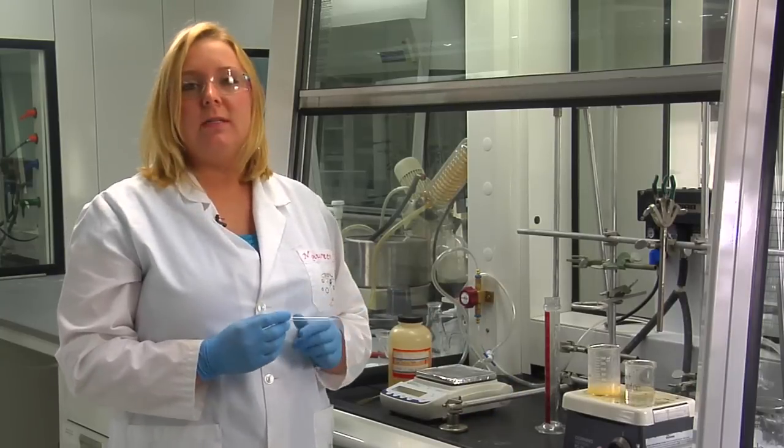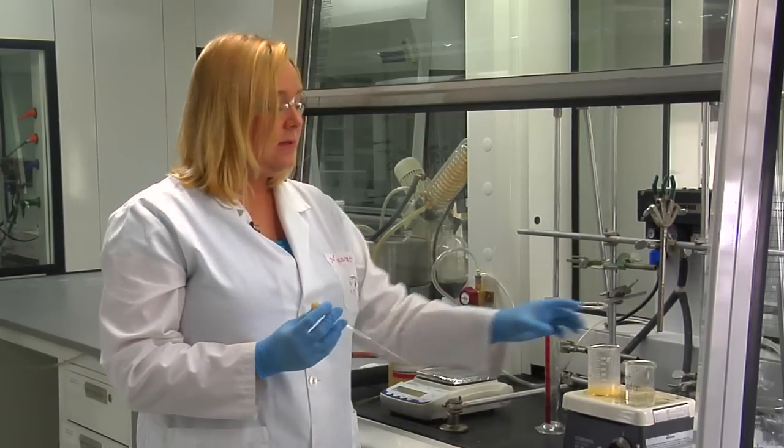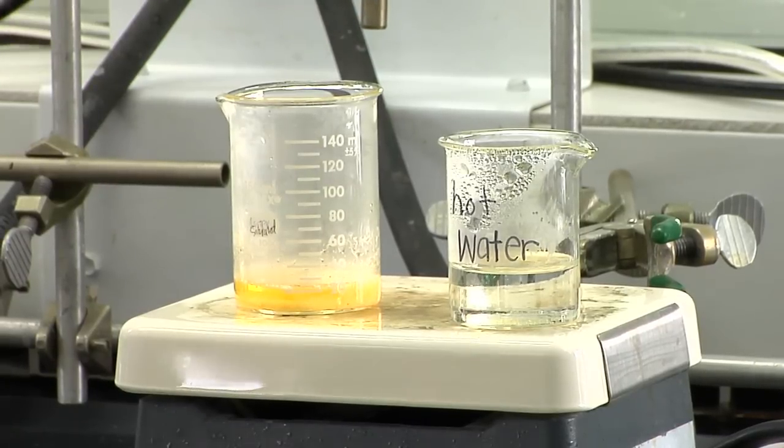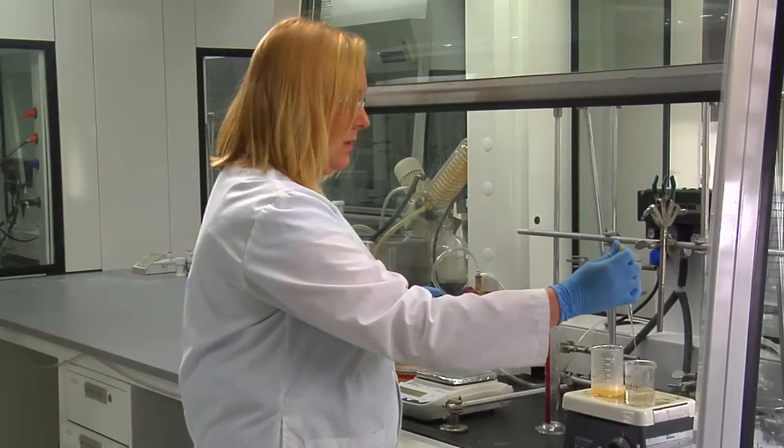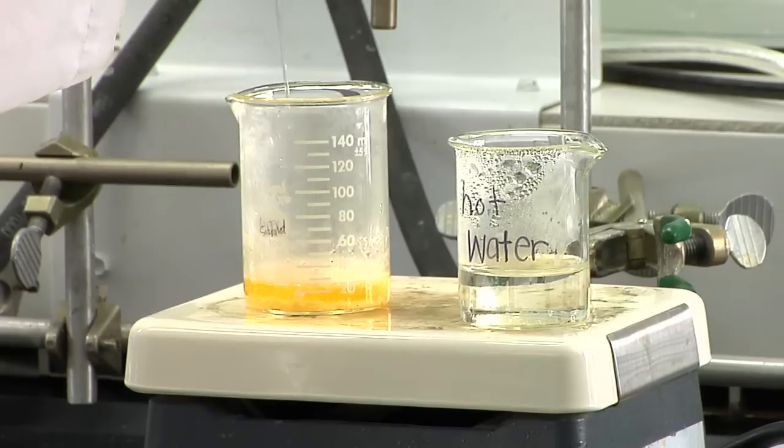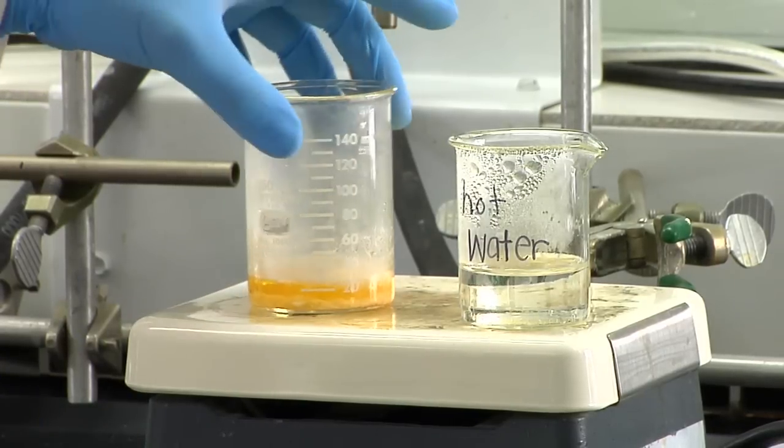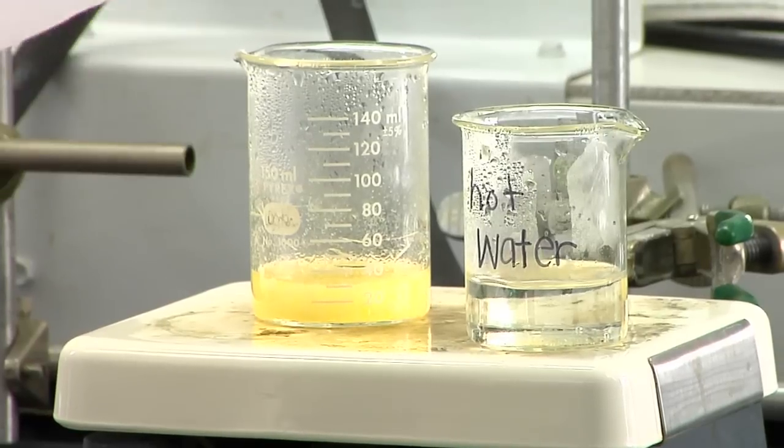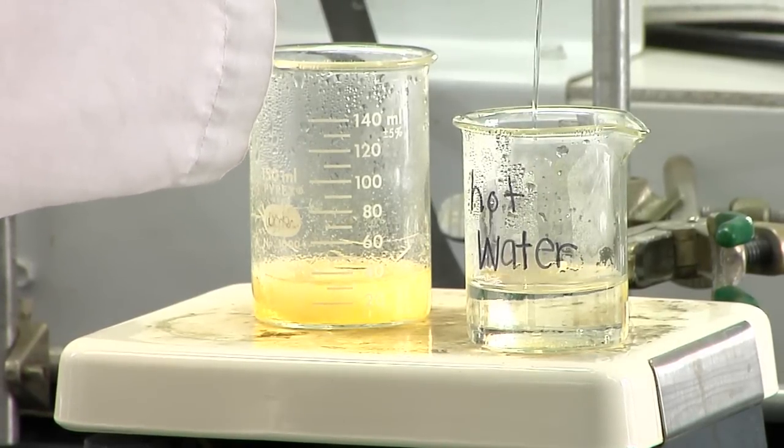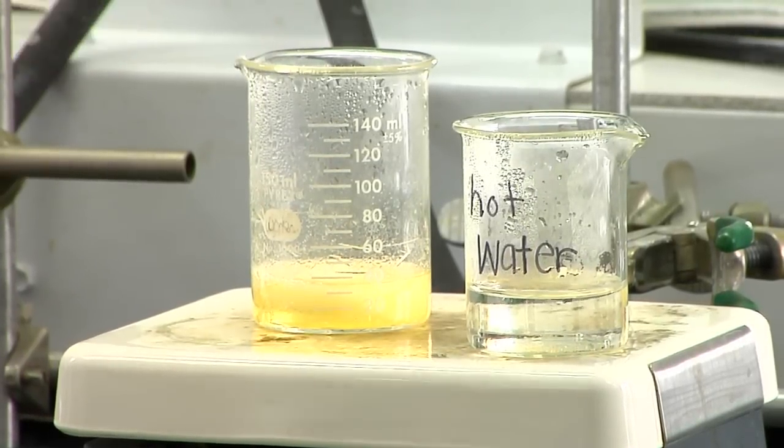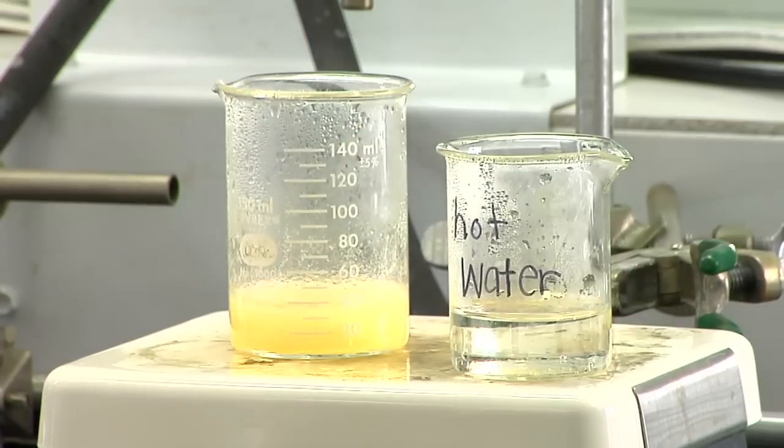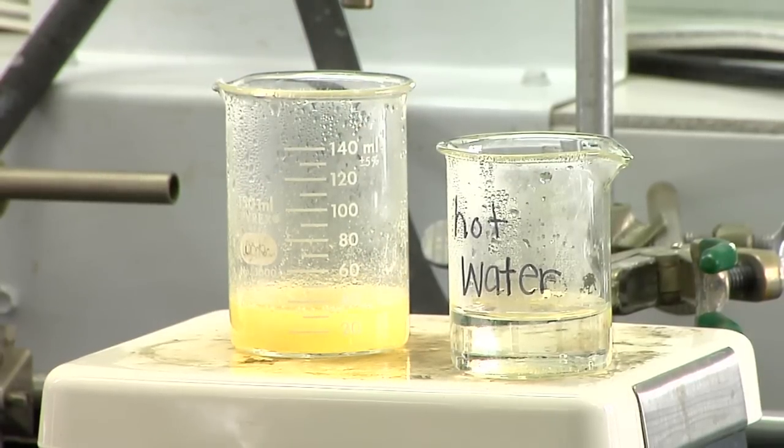Now we're going to add about 2 mils of water using our Pasteur pipette until our compound fully dissolves in the water. Make sure that you record how much water you're adding to your compound to get it to dissolve. With each pipette, we add about 1 mil. Continue to add water until your compound completely dissolves. You just gently swirl the beaker to help your compound dissolve. You don't need to use a stir rod or a spatula.